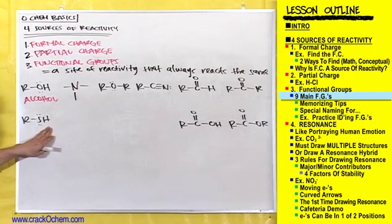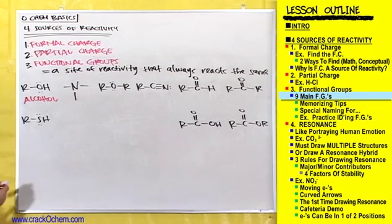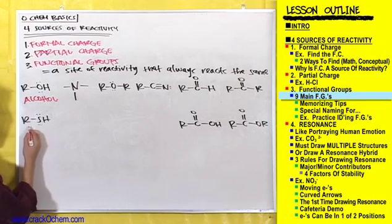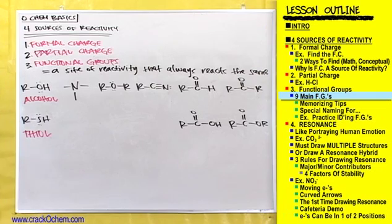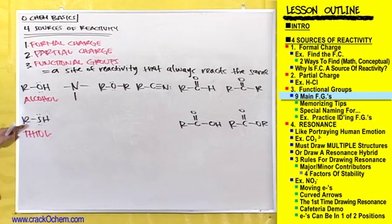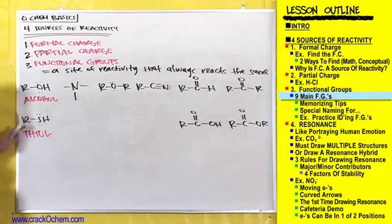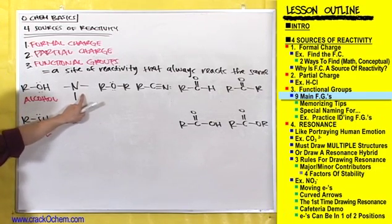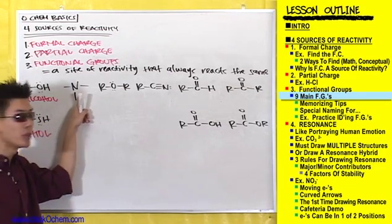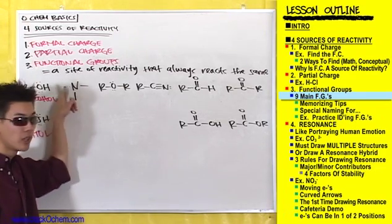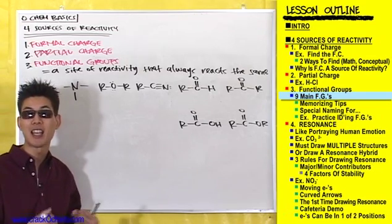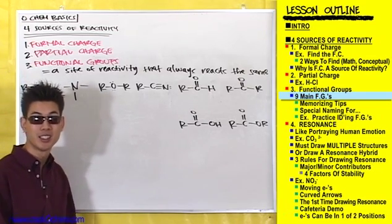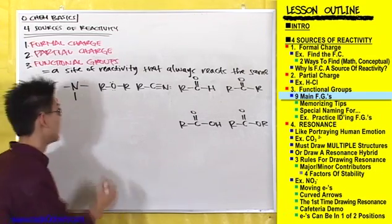An SH bonded to an R group is called a thiol. Any SH group connected to an alkyl group, a carbon group, is called a thiol. This nitrogen that has three bonds coming off of it — a nitrogen connected to any three things — is called an amine.